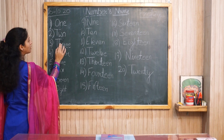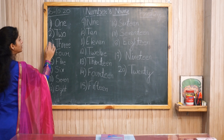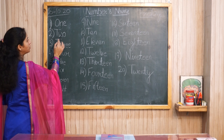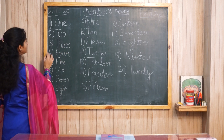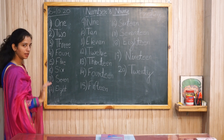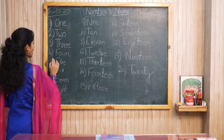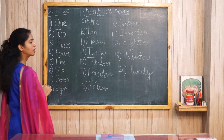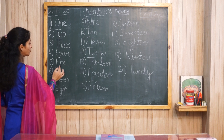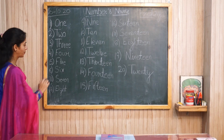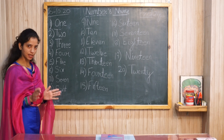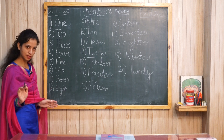Two: T-W-O. Three: T-H-R-E-E. Four: F-O-U-R. Five: F-I-V-E. Six: S-I-X.